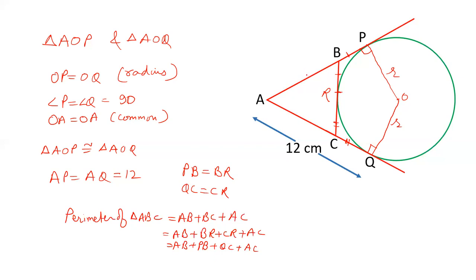AB and PB becomes AP, and AC and QC becomes AQ. And we know the lengths of AP and AQ are 12 each. 12 plus 12, that is 24. So the perimeter of triangle ABC will be 24 centimeters, by the property that tangents from an external point are equal in length.